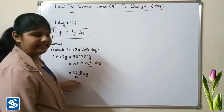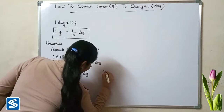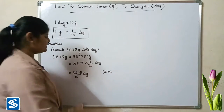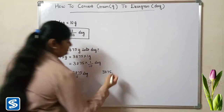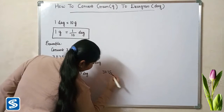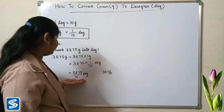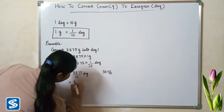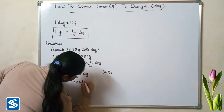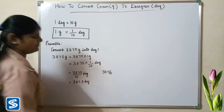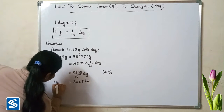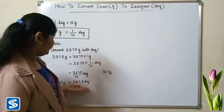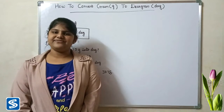3875 multiply 1 will be 3875, so 3875 divided by 10 decagrams. The easy way to divide by 10 is to move the decimal point one place to the left, because 10 has only one zero. So when we divide 3875 by 10, our answer will be 387.5 decagrams. So 3875 grams is equal to 387.5 decagrams.